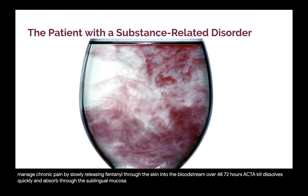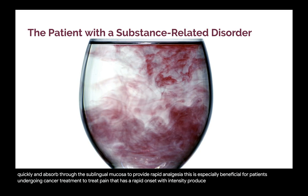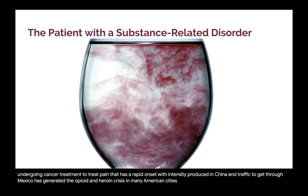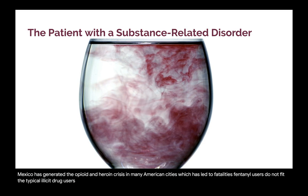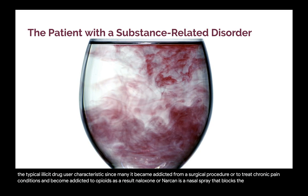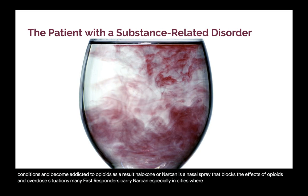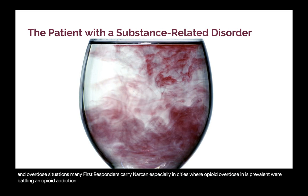Street-produced fentanyl, produced in China and trafficked through Mexico, has generated the opioid and heroin crisis in many American cities, leading to fatalities. Fentanyl users do not fit the typical illicit drug user characteristics, since many became addicted from a surgical procedure or to treat chronic pain. Naloxone (Narcan) is a nasal spray that blocks the effects of opioids in overdose situations; many first responders carry Narcan, especially in cities where opioid overdosing is prevalent. Individuals or families with a member battling an opioid addiction are encouraged to carry Narcan, and it is included in many dental office and clinic emergency kits.